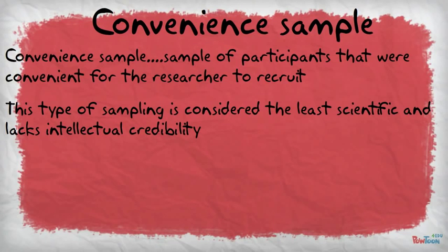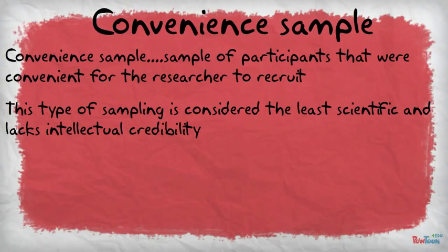For example, let's say a researcher who is a college professor is interested in conducting a phenomenology, studying participants' meaning of their experiences with homelessness. The college professor, who is the researcher, decides to sample those who are convenient to recruit for the study, so he or she recruits students from the classes that they're teaching.